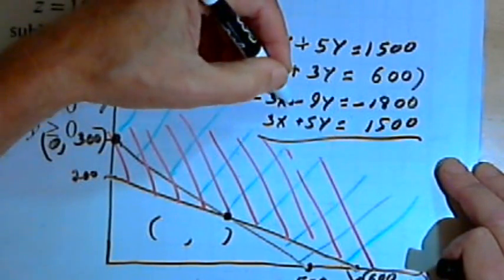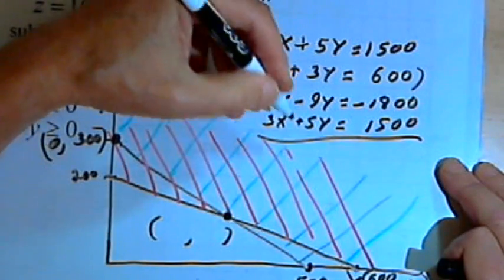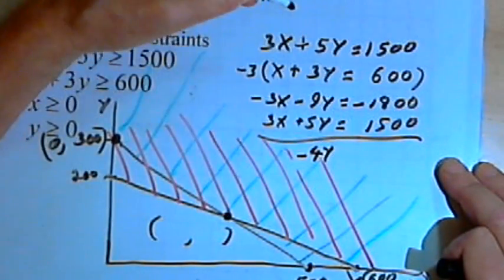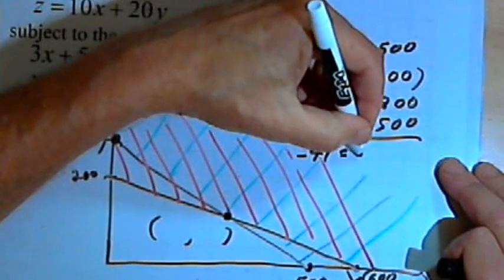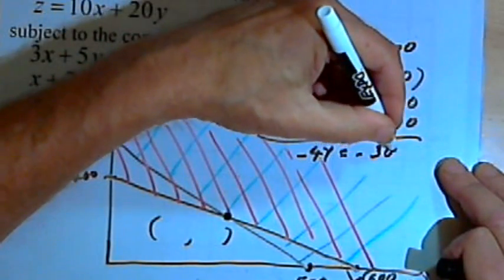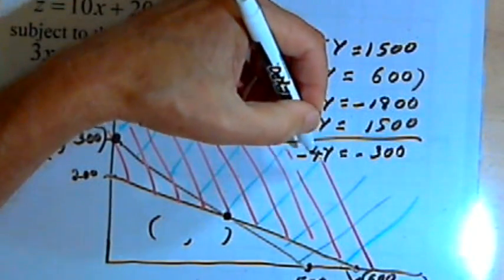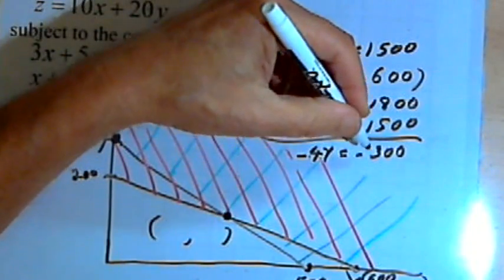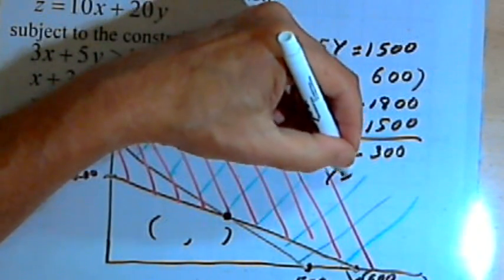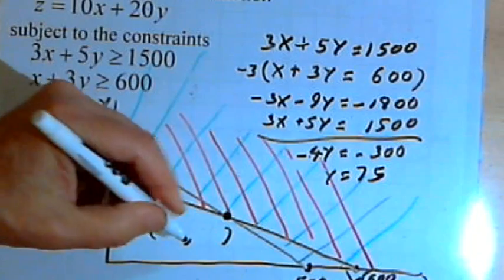I'll add the two equations together. The x's cancel. I get negative 4y equals negative 300. I'm gonna divide by negative 4, and I'm going to get y equals 75.